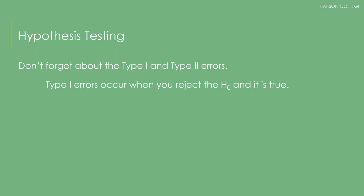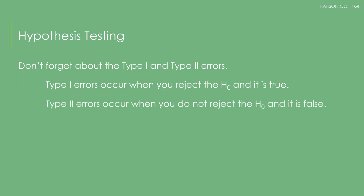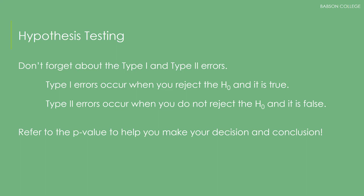A Type 1 error occurs when you reject the null and it is true. A Type 2 error occurs when you do not reject HO and it is false. Refer to the p-value to help you make your statistical decision and conclusion.